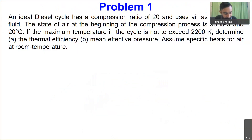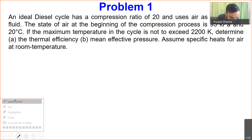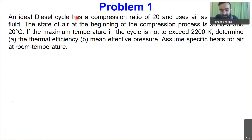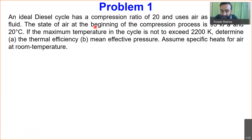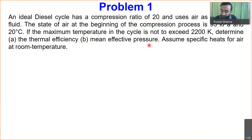This is Problem 1 — an ideal diesel cycle. The compression ratio r = v1/v2 is given as 20. Air is the working fluid. The state of air at the beginning of compression is 95 kPa and 20°C, and the maximum temperature in the cycle should not exceed 2200 K.